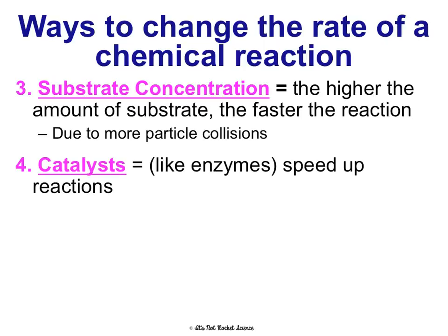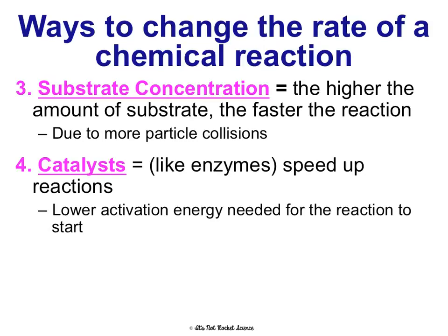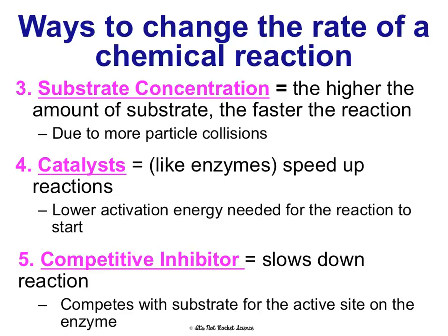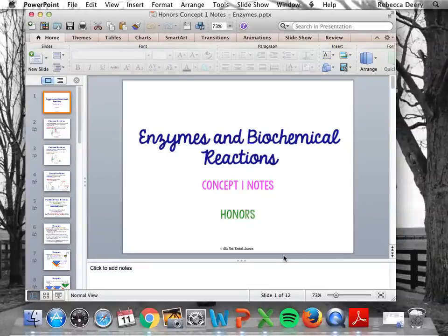Fourth, catalysts speed up a reaction by lowering activation energy — enzymes are catalysts that are specifically proteins. Fifth, competitive inhibitors slow down reactions by competing with the substrate for the active site on the enzyme, preventing the substrate from binding and slowing the reaction. We're going to look at three of these factors in a lab we'll do together. That is your concept one notes for your honors class.